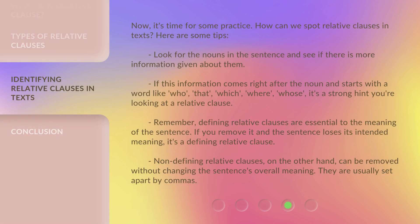Now it's time for some practice. How can we spot relative clauses in texts? Here are some tips: Look for the nouns in the sentence and see if there is more information given about them. If this information comes right after the noun and starts with a word like who, that, which, where, or whose, it's a strong hint you're looking at a relative clause. Remember, defining relative clauses are essential to the meaning of the sentence — if you remove it and the sentence loses its intended meaning, it's a defining relative clause. Non-defining relative clauses, on the other hand, can be removed without changing the sentence's overall meaning, and they are usually set apart by commas.